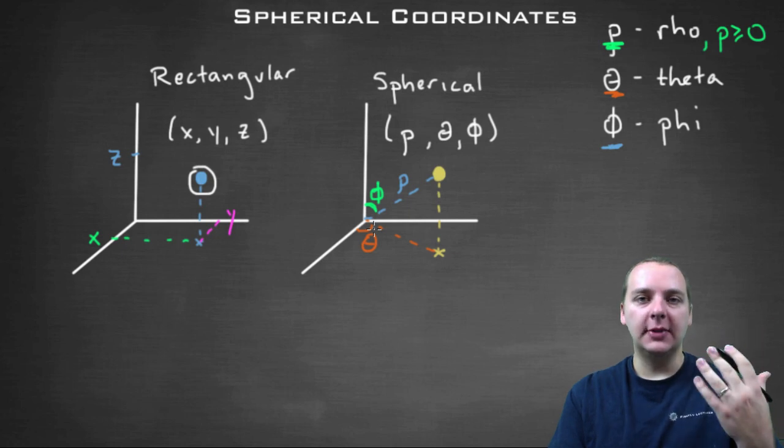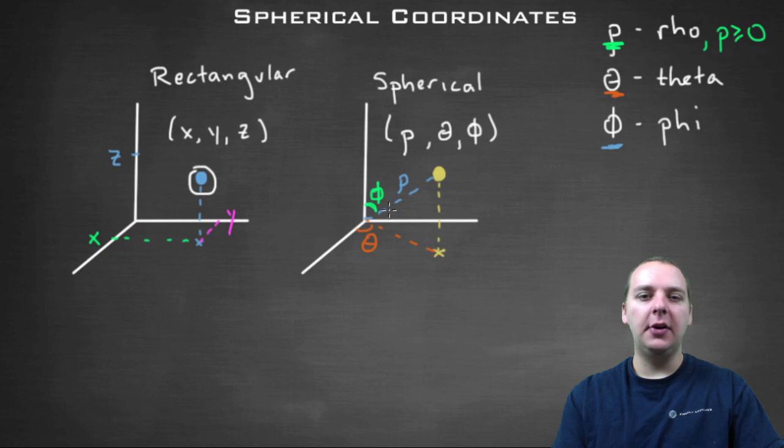At least that's the way that seems natural to me. But on closer inspection, that's actually not a very good idea. Because you'll notice, this line segment right here where the phi would be measured from that I'm highlighting in blue, that's never consistent. As the point moves around, it might be here, or it might be here, or it might be here.